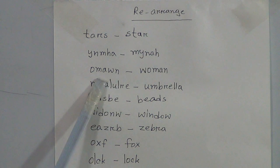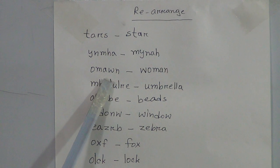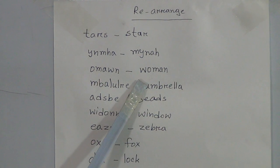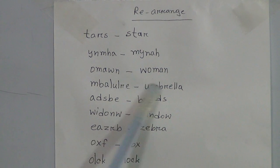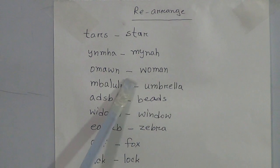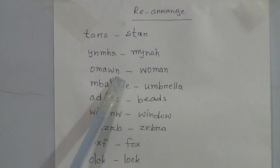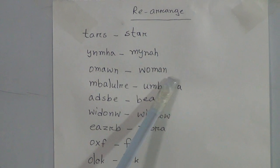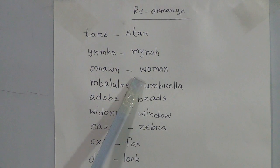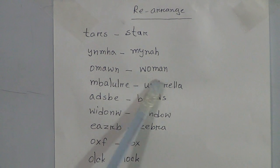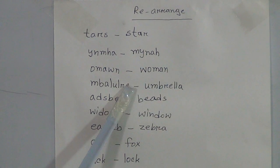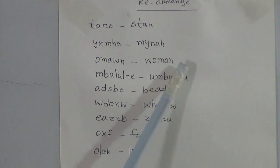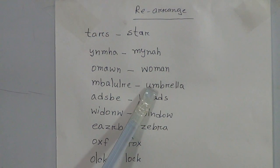Then the next jumbled letters: O, M, A, W, N. If we arrange these jumbled letters, we will get a meaningful word: woman. Spelling is W-O-M-A-N, woman.